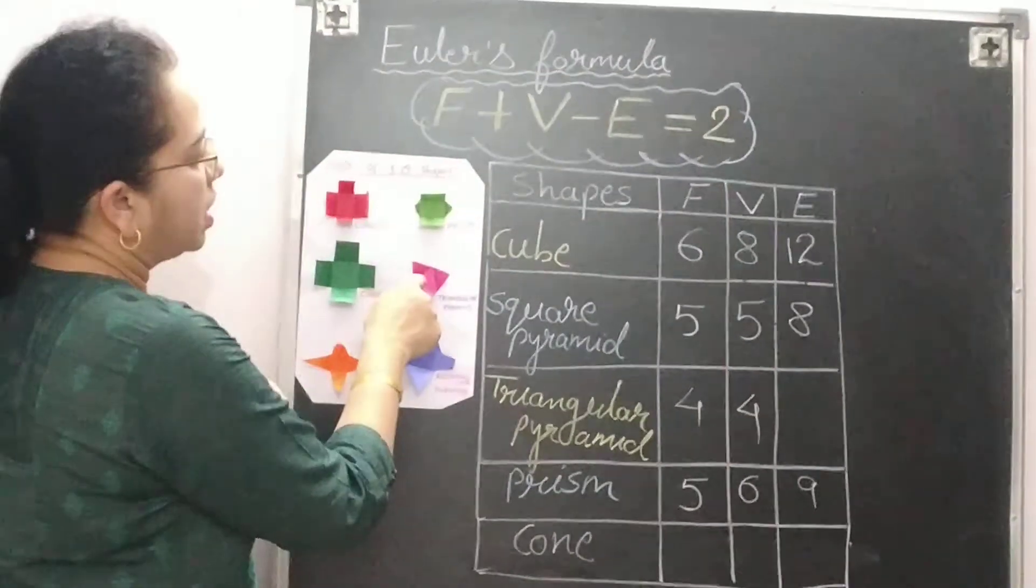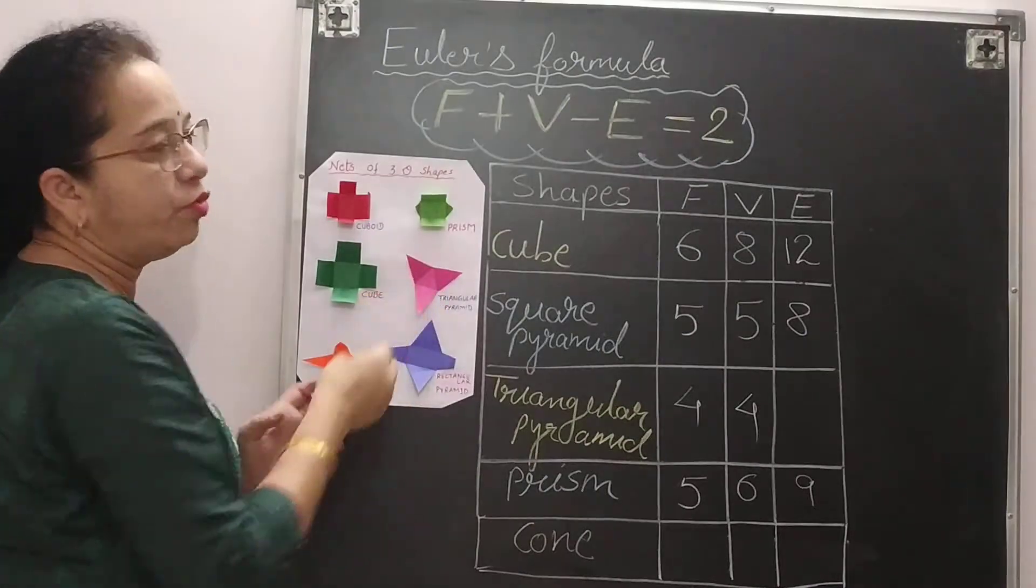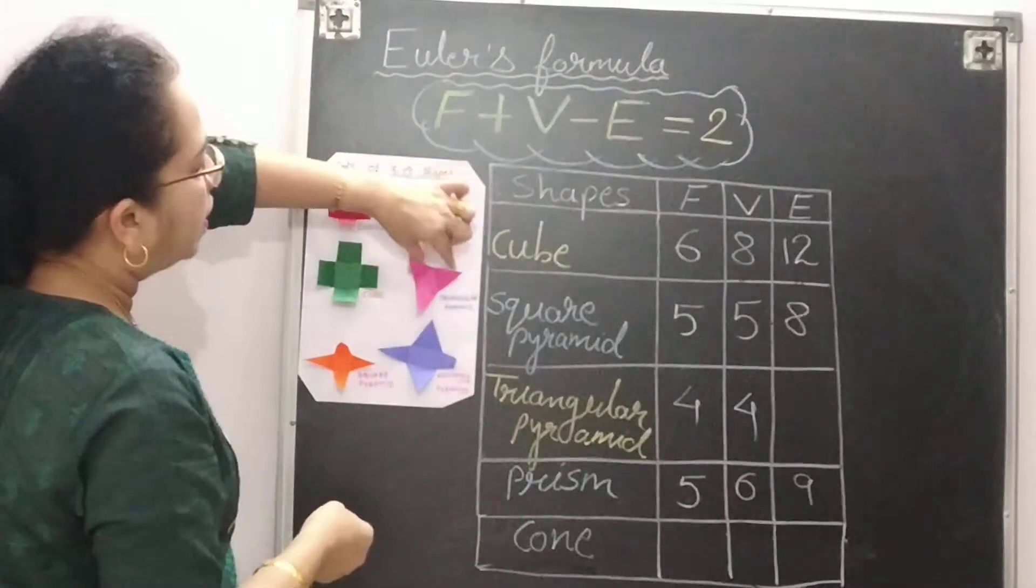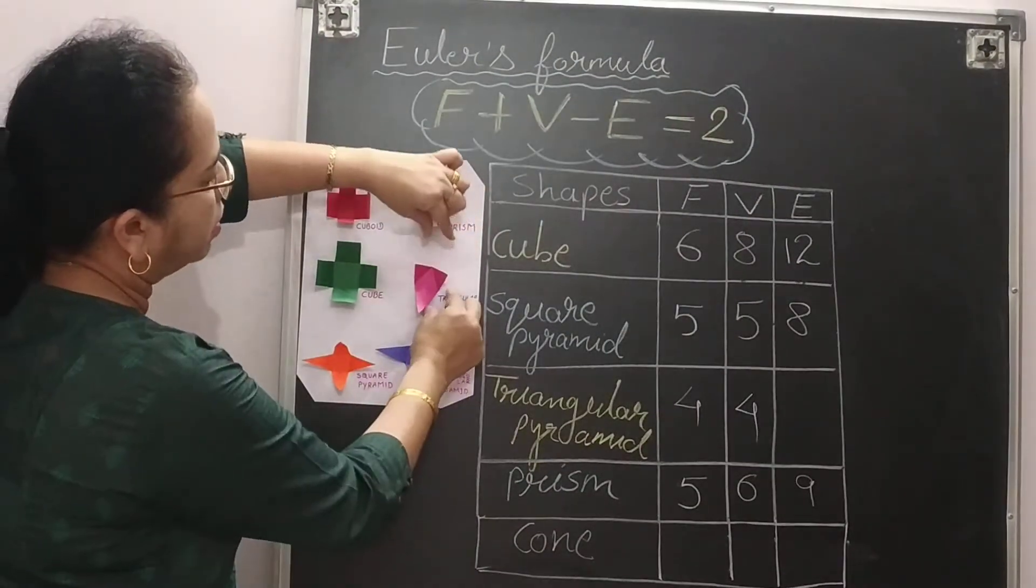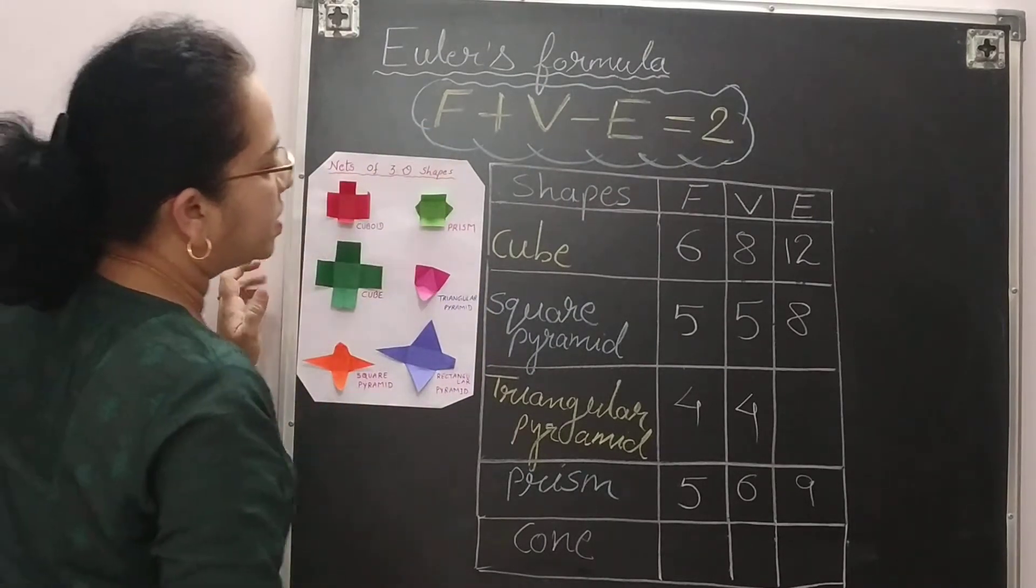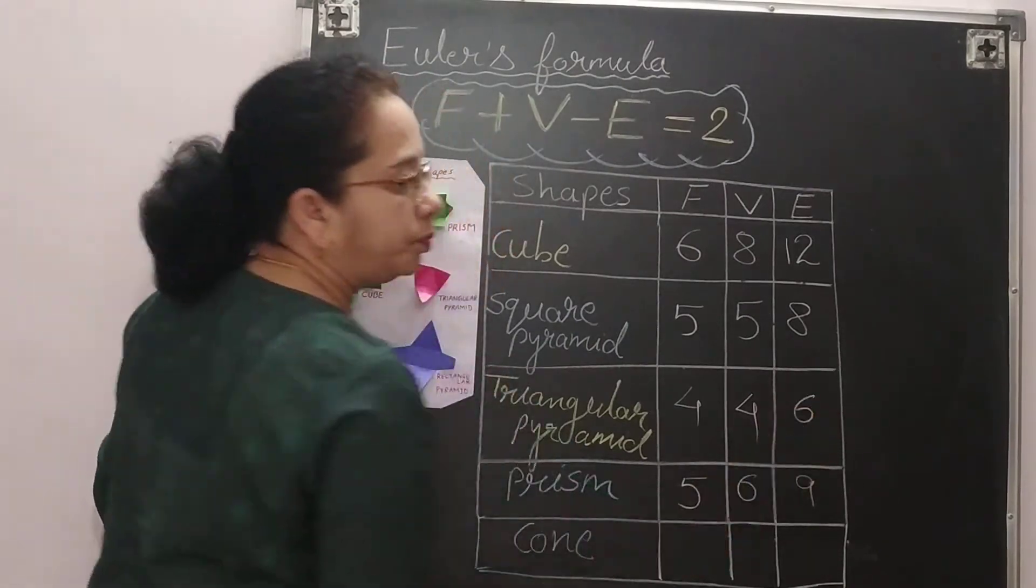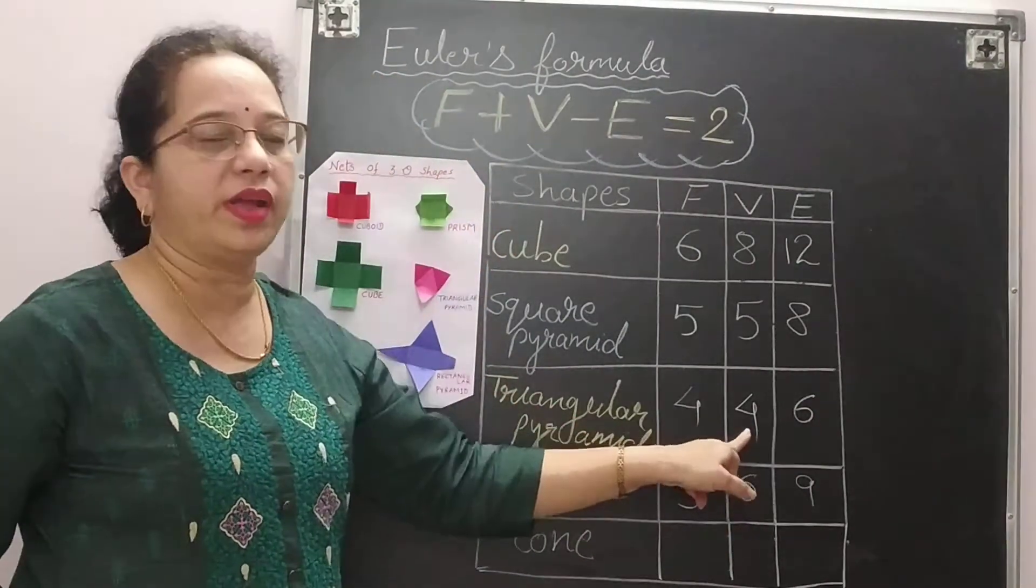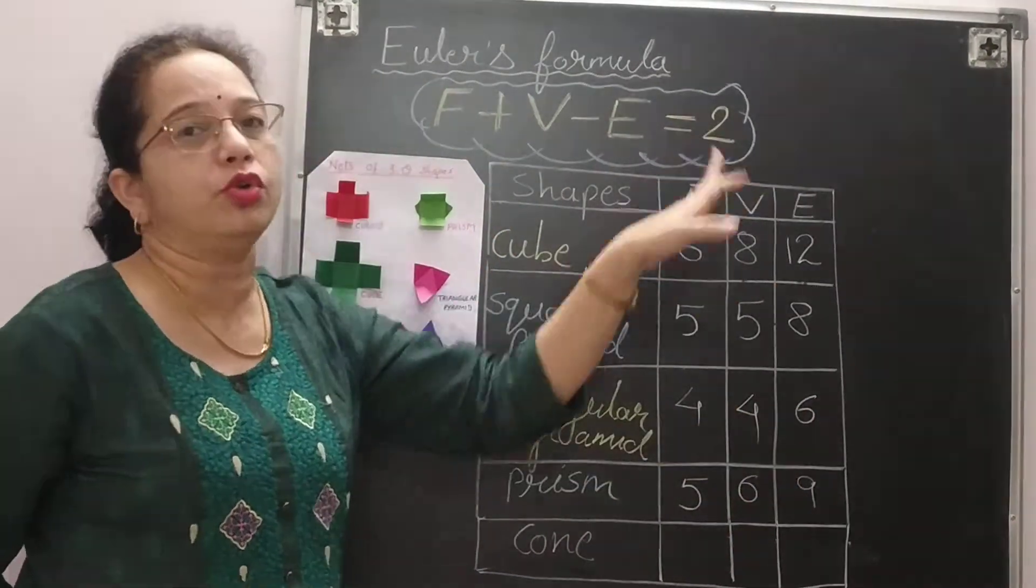Now we will count edges. So for this base triangle you will get 3 edges. This one will give you 1, this will give you 2 and this will give you 3. So 3 plus 3, 6 edges are there. So again 4 plus 4, 8 minus 6 will give you 2.